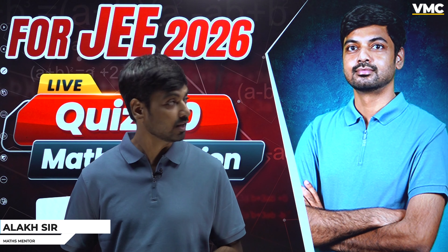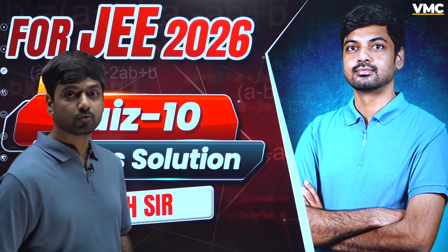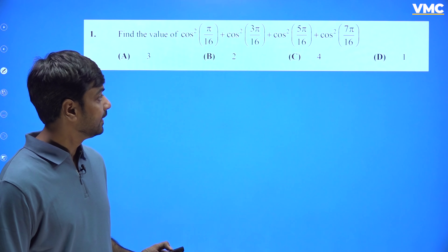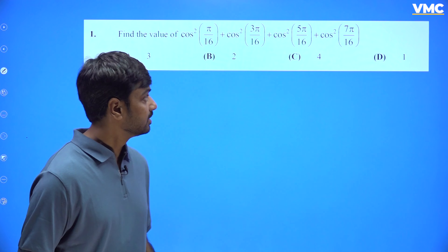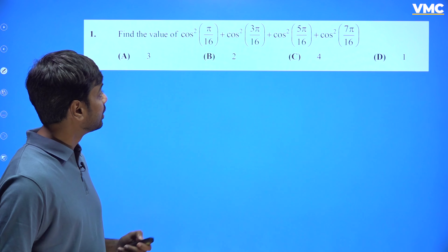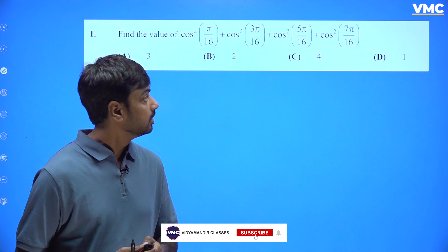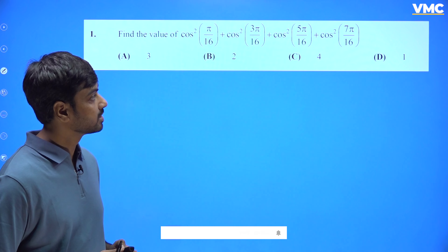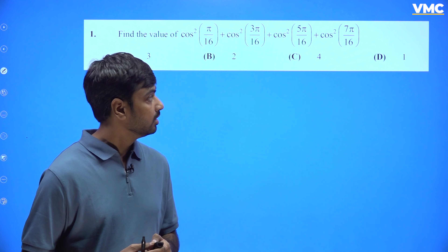Hello everyone, this is Alakh Bhaiya and I am here with Quiz 10 solutions — Trigonometry. So on your screen this is the first question. We have to find the value of cos²(π/16) + cos²(3π/16) + cos²(5π/16) + cos²(7π/16).